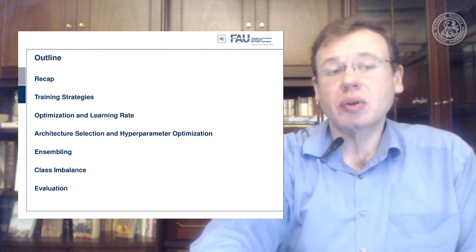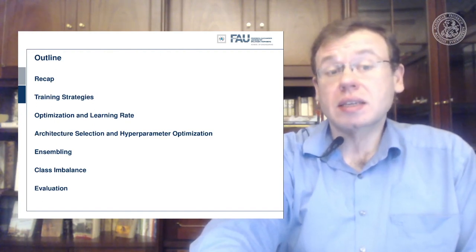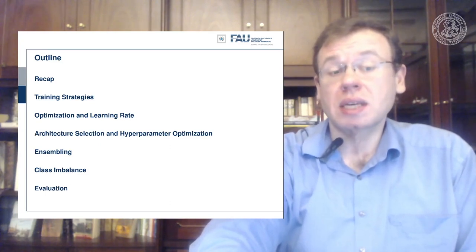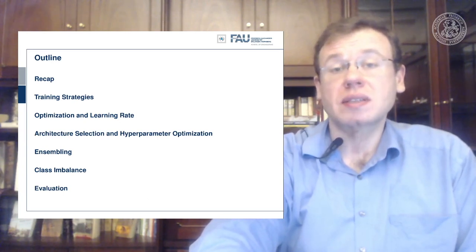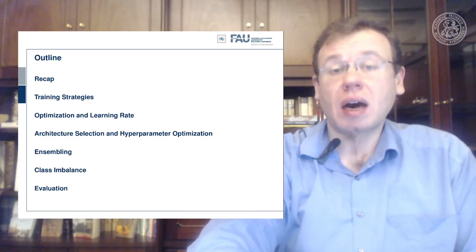We'll talk about training strategies, optimization and learning rate, and a couple of tricks how to adjust them. Architecture selection and hyperparameter optimization. One trick that is really useful is ensembling. Typically people have to deal with class imbalance, and of course there are also very interesting approaches how to deal with them. Finally, we look into the evaluation and how to get a good predictor of how well our network is actually performing.